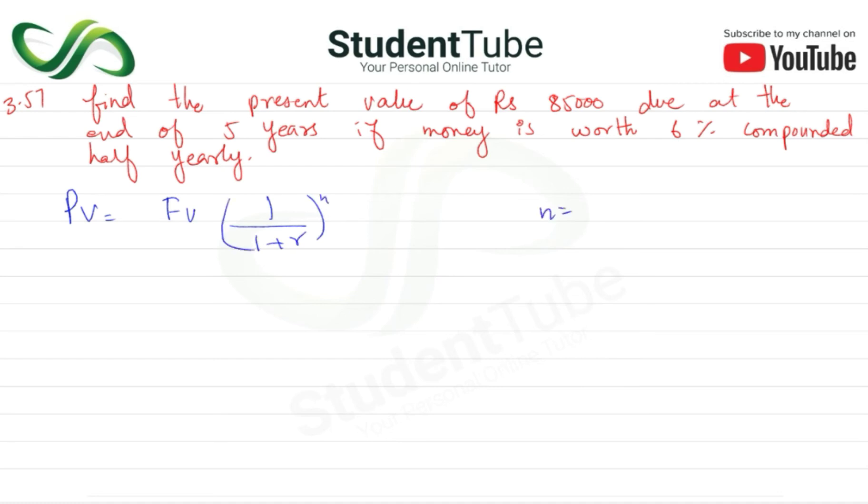is equal to m multiply by t. M hai half yearly, that means kya 2, multiply by 5 years, so 10. R is equal to i upon m. I mein 6 percent, so